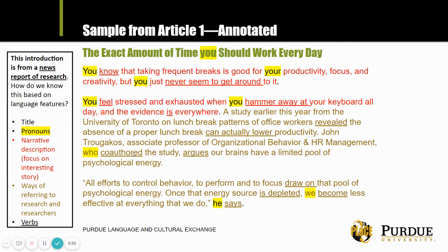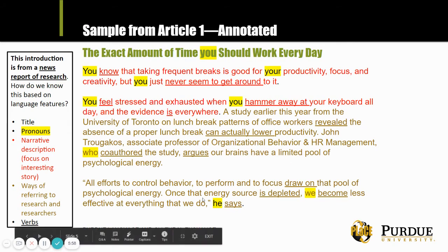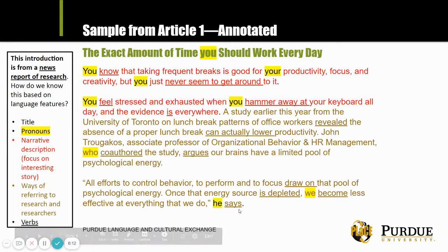Some of the features we see are: identifying the name of the university, the name of the researcher, and the title of the university. Then there's actually a quote from the researcher — 'he says' — and that brings us to our last point: the verbs. Reporting verbs like 'he says' are not very common in academic research.